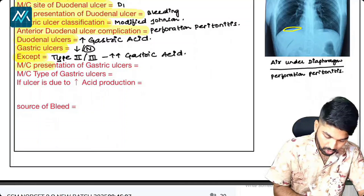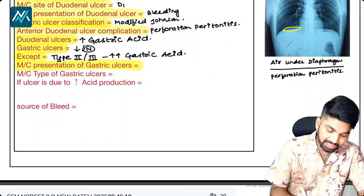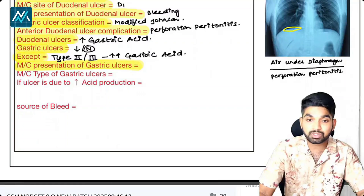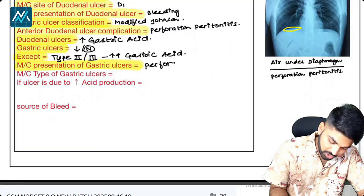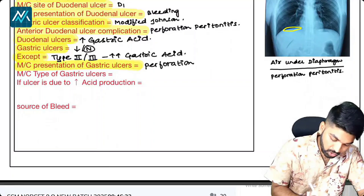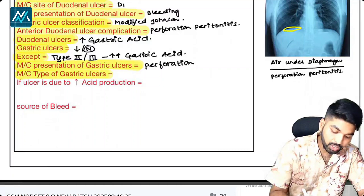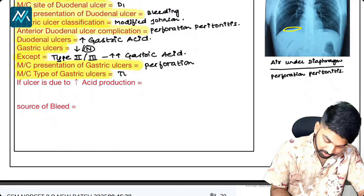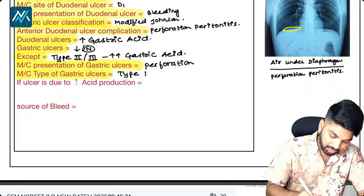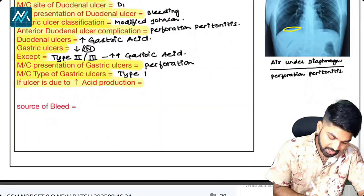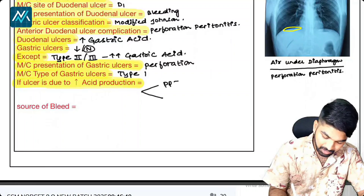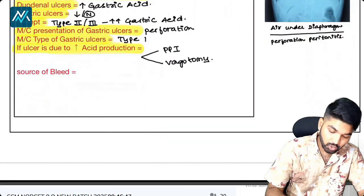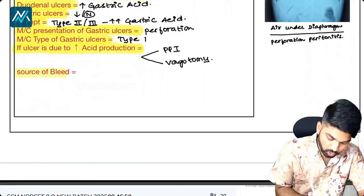The most common presentation of gastric ulcers — excellent, Bhavani — it is perforation. The most common type of gastric ulcer is type 1. If the ulcer is due to increased gastric acid production, you manage it with PPI and you can also do vagotomy.